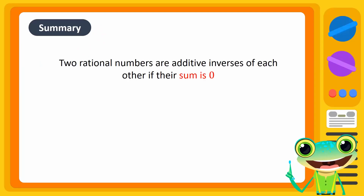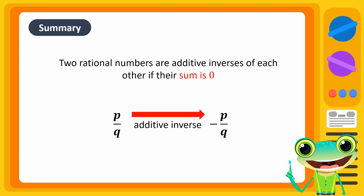In summary, two rational numbers are additive inverses of each other if their sum is zero. Generally, the additive inverse of a rational number p over q is minus p over q, and vice versa.